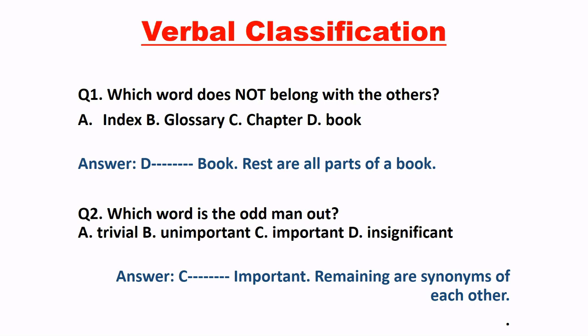Verbal classification. Is type ki category mein, aapko kuch words diye rhenge aur aapko identify karna hai ki kya sabhi words ek dusre ko match karte hai. Now look at question number one: which word does not belong with the others? Is question mein puchha hua hai ki diye hoye words mein se aisa koon sa word hai joh baqi teen words ki category ko belong nahi kerta. Four options are given: index, glossary, chapter, and book. Toh yahaan par joh book hai, woh remaining teen ko belong nahi kerta hai, kyunki index, glossary and chapter — yhe book ka part hote hai. But book is a different thing. So answer D is correct, because the rest are all parts of a book.